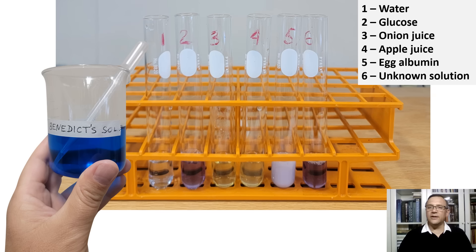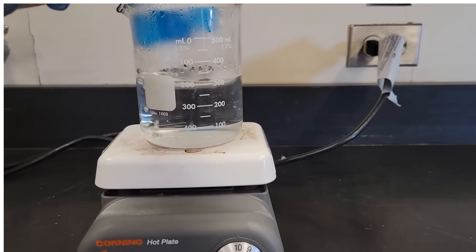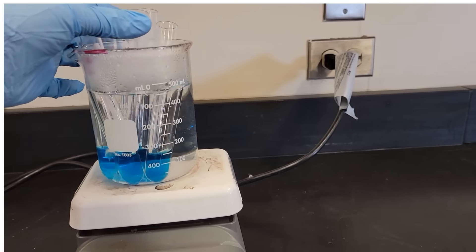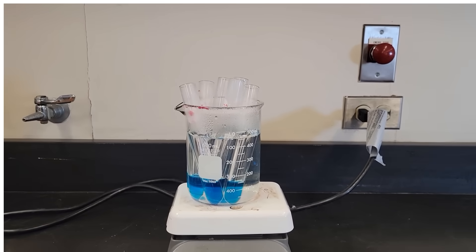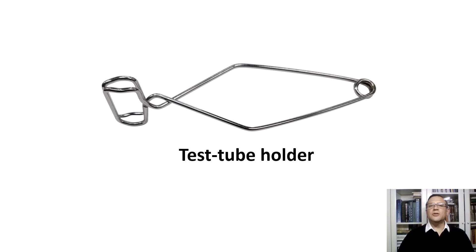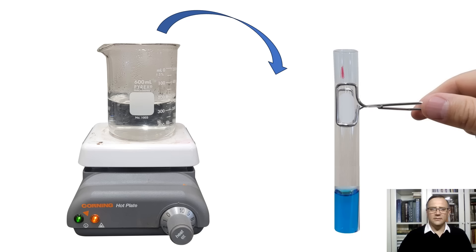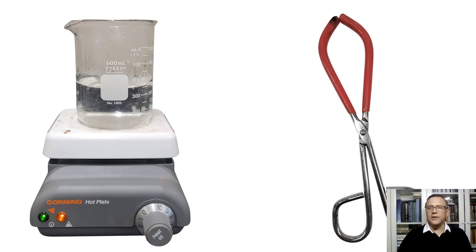We have added two milliliters of Benedict's reagent to each of our controls and food samples. Initially, nothing happens — there are no visible changes. For the precipitate to form, we need to heat our solutions. The water is boiling, so we will place all our test tubes inside the beaker simultaneously. After five minutes, we carefully take our test tubes out of the beaker using a test tube holder. Let's turn off the hot plate and remove the beaker using tongs.